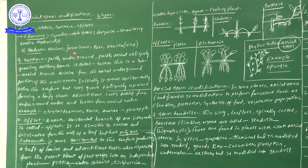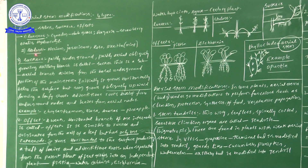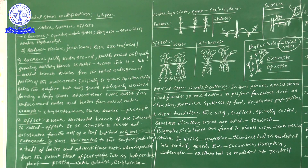For Stolons: examples are Nerium, Jasminum, Rosa, and Mentha (Mint Plant). In Stolons, the lower branches grow aerially and then grow obliquely downwards towards the soil. When that branch touches the soil, adventitious root formation takes place. After root formation, if you separate that branch from the parental plant, the daughter plant can live independently.